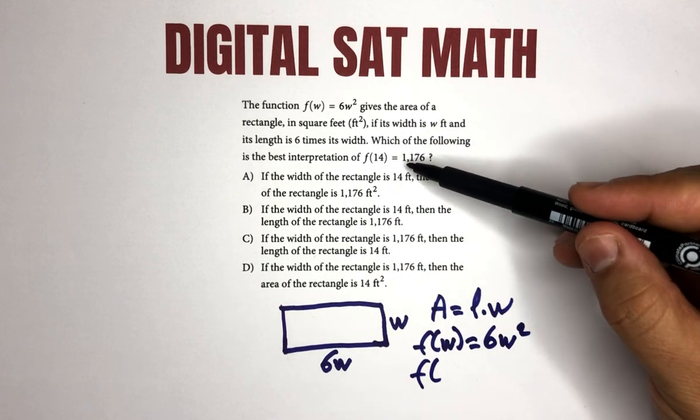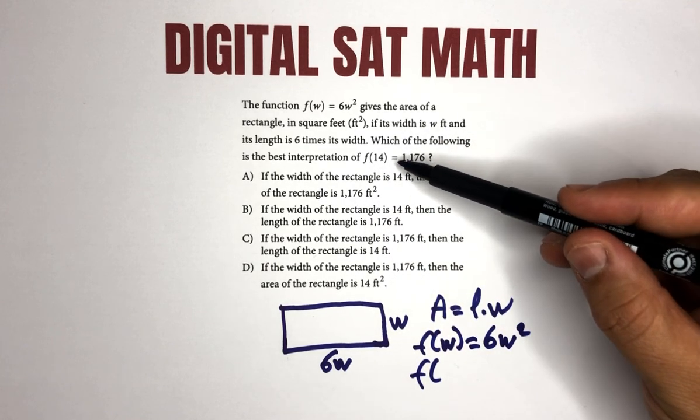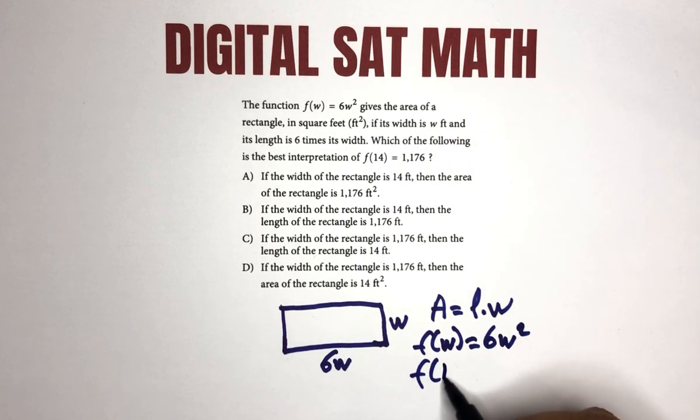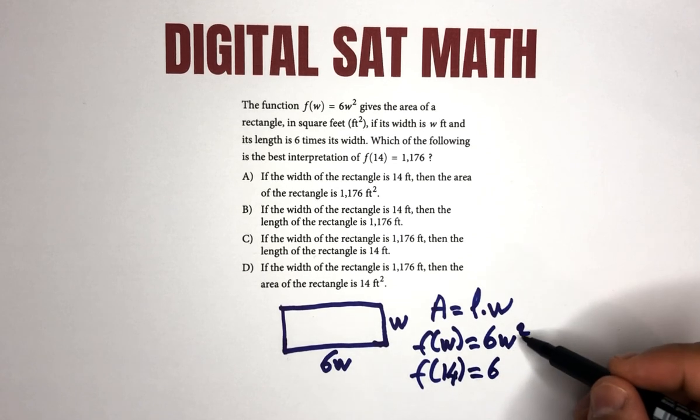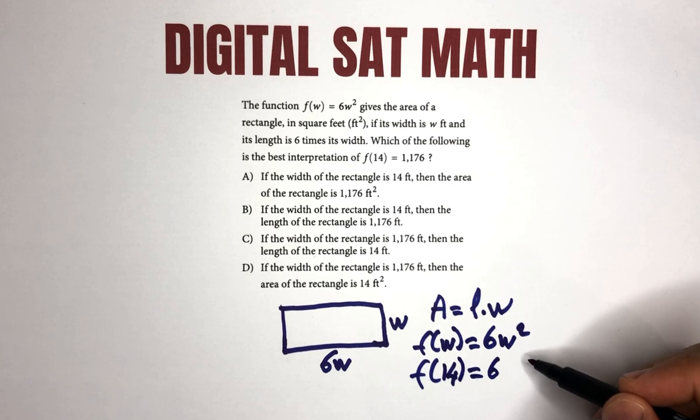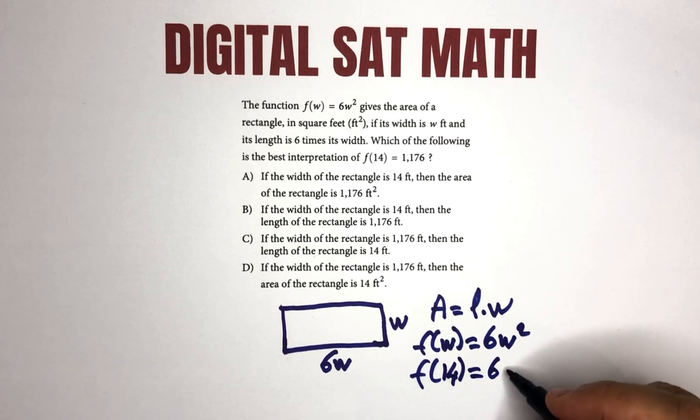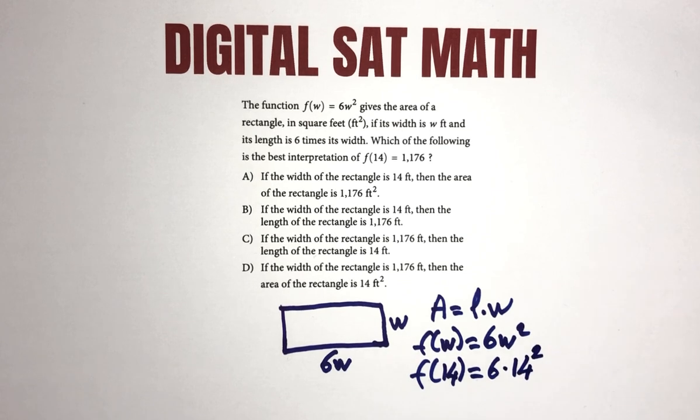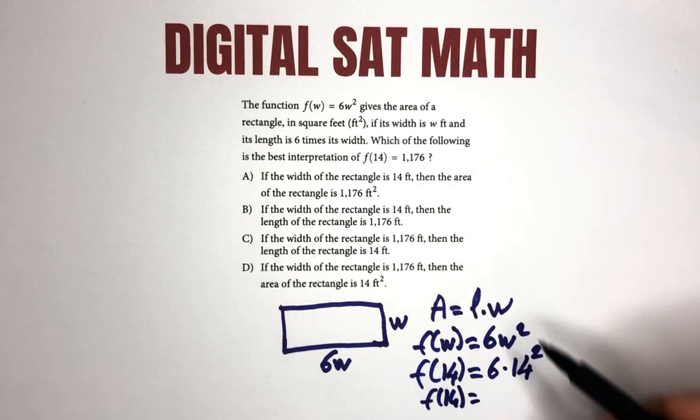So technically you're going to substitute wherever you see w in this function, you will substitute 14. So 6 times 14² or 14 squared. So this will give you f(14) equals, when you do the calculation, you will get that it's 1,176.